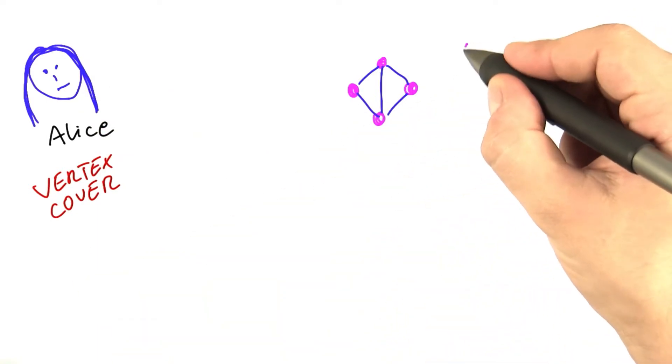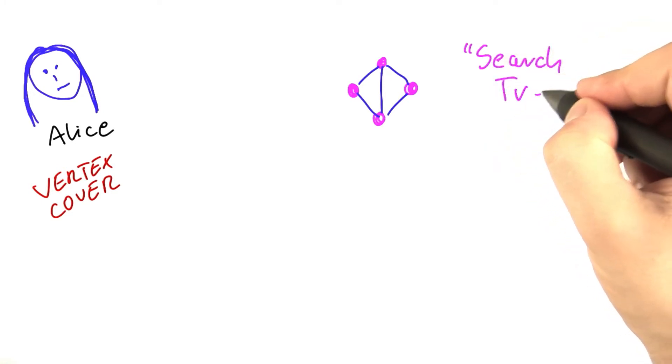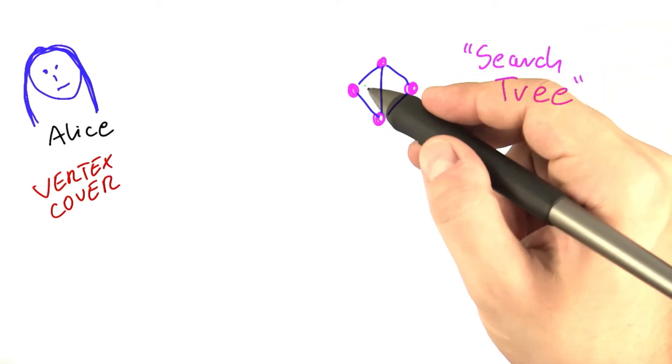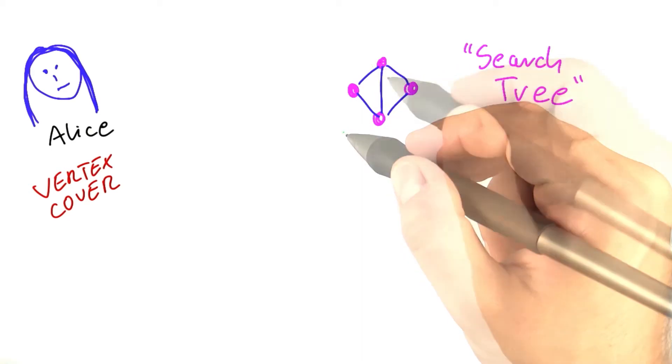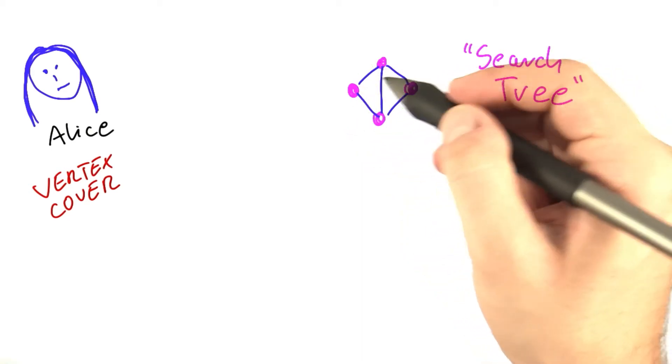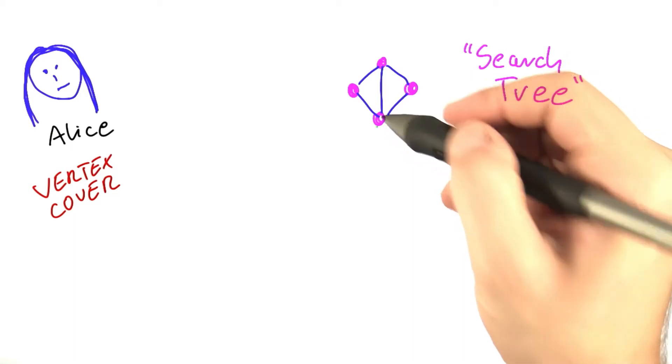And that better technique is known as a search tree. You will soon see why it's called a tree. If you were solving vertex cover by yourself, you would probably take the following approach: you would not say for all vertices together if they are in the vertex cover or not.